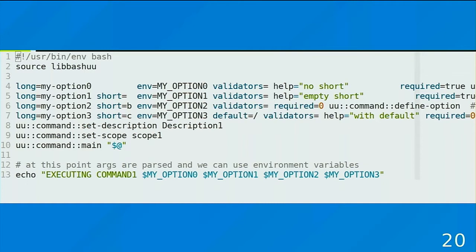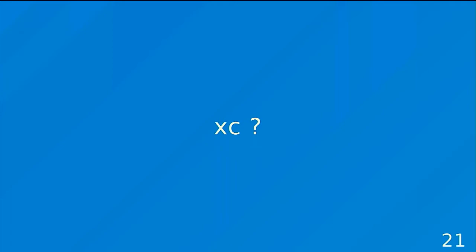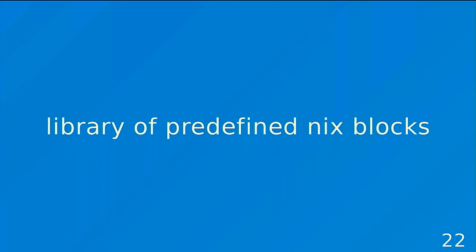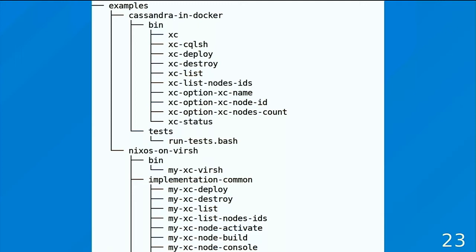That was a library for bash to produce CLI interfaces quickly. Now NixCluster — this is just a set of functions, mostly bash, where you have specific sets of requirements you want to deliver. In this case you have Cassandra in Docker and NixOS on VPS. You have everything inside and you can use them or develop your own. These files don't have more than about 10 lines of code and are pretty reusable.